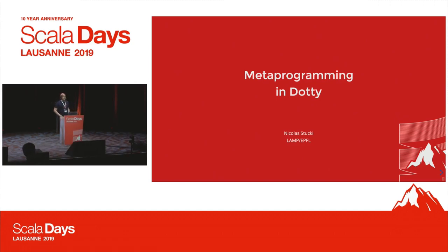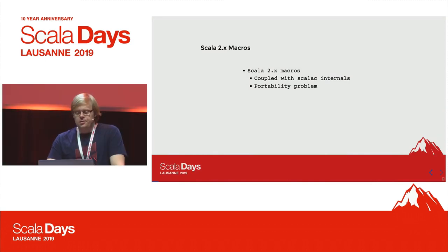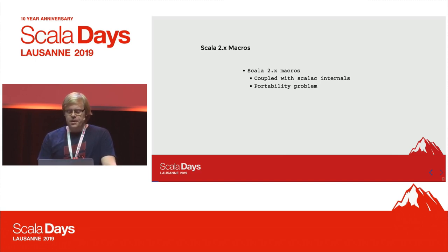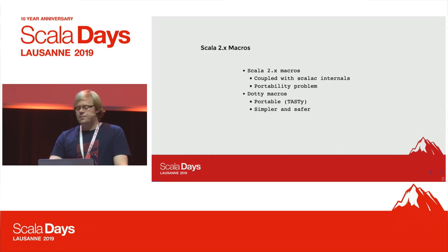Hello, I work in the LAMP here at the EPFL and I'm working on metaprogramming for Scala 3. We're going to focus more on macros than other kinds of metaprogramming in this presentation. To start, I'll quickly say something about Scala 2 macros. The implementation was quite coupled with the Scala compiler internals, which led to portability issues even across different versions of Scala 2, making it quite impossible to port to Scala 3. There were quite a few attempts and it was deemed impossible. So what we did for Scala 3 is redesign the core of the metaprogramming infrastructure.